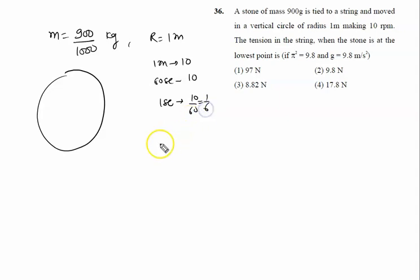That's 1 by 6 revolutions per second, so frequency is 1 by 6 revolutions per second. The tension in the string when the string is at the lowest point - string is at this point - then what is the tension? We'll draw the FBD here.